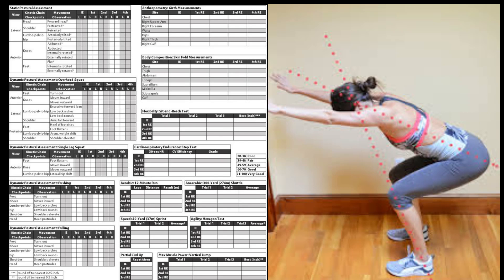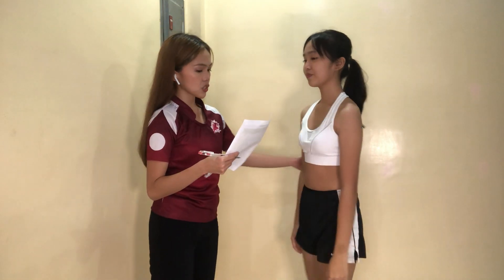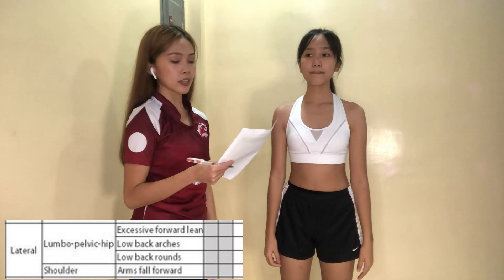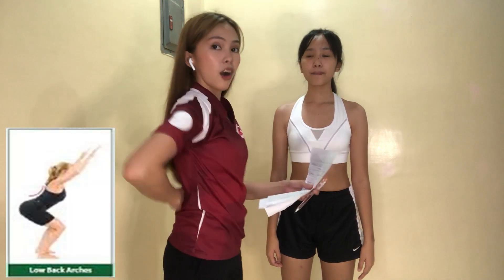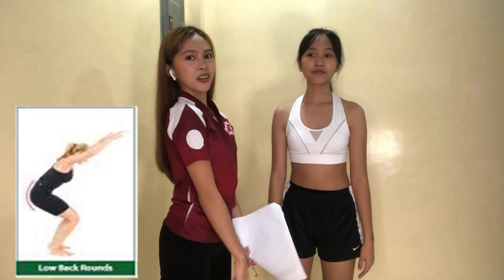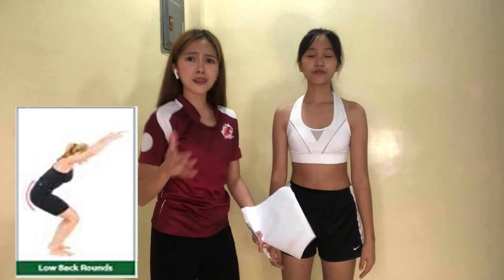There is an excessive forward lean when the client folds their body forward — it's almost like they're bowing down while performing an overhead squat. Now we're going to check if there's a low back arch or low back round. Low back arch means there is an arch in the lumbar pelvic hip while performing the overhead squat, and low back round is the opposite — these are compensations, please do not follow.